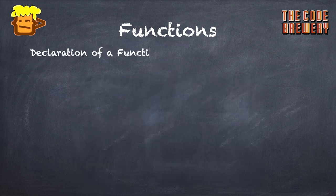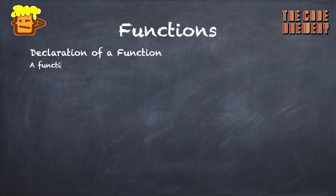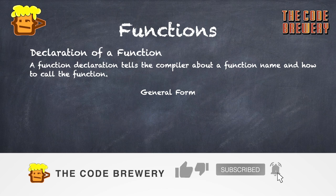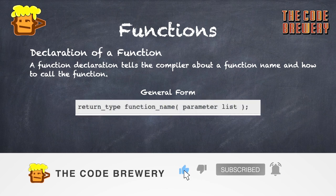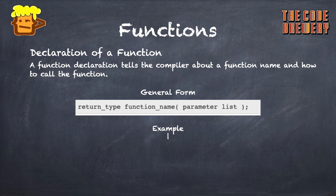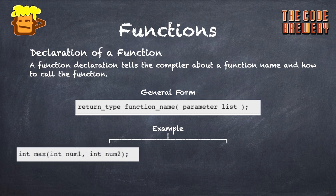Now we'll discuss about declaration of a function. How we declare it? A function declaration tells the compiler about a function name and how to call the function. The general form is normally return type, function name, and parameter list.